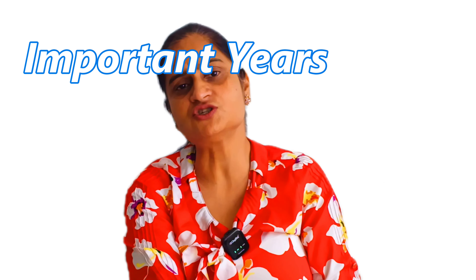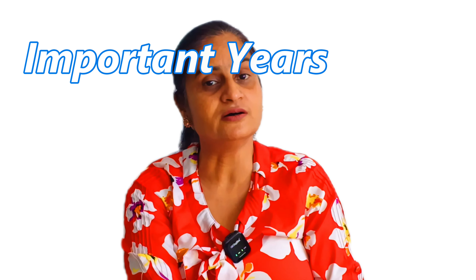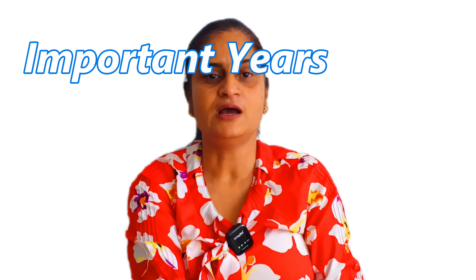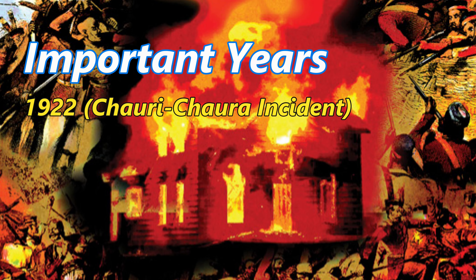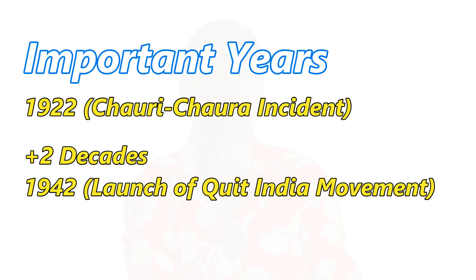When the Non-Cooperation Movement was launched, Mahatma Gandhi told the people that if they followed the path of non-violence, independence could be achieved in a year. But one year passed and it was not achieved. In another year, people lost their patience and set a police station on fire at Chauri Chaura in UP. Mahatma Gandhi subsequently suspended the movement, so it continued only for two years and was suspended in 1922. Adding two decades to 1922 gives us 1942 — the year of the launch of the Quit India Movement.